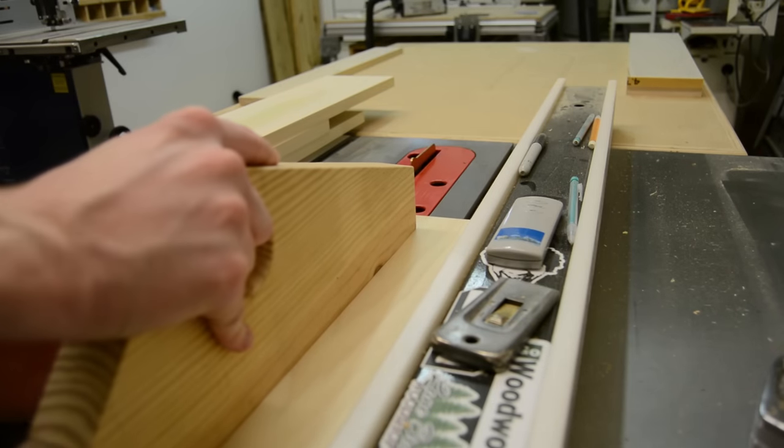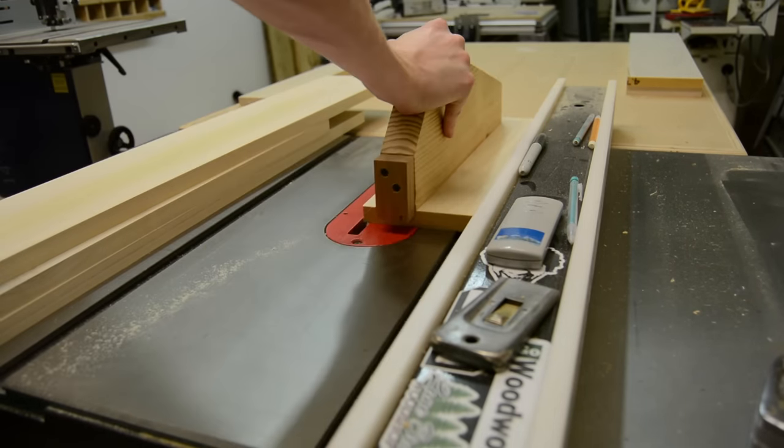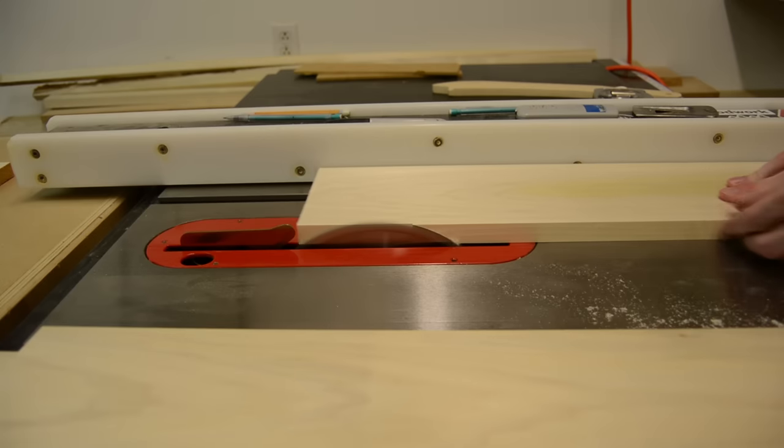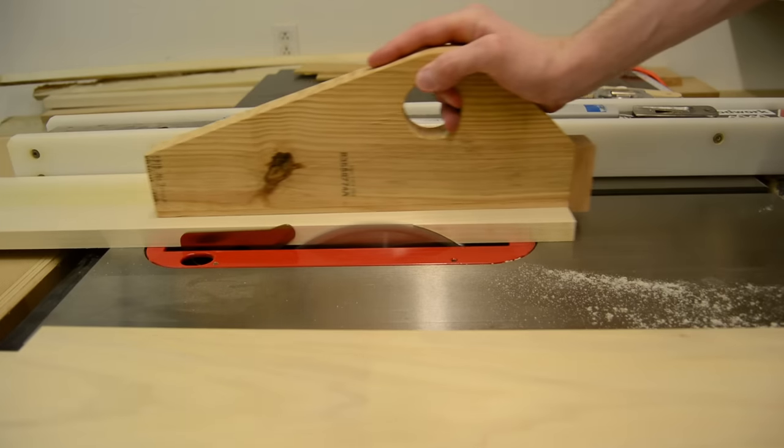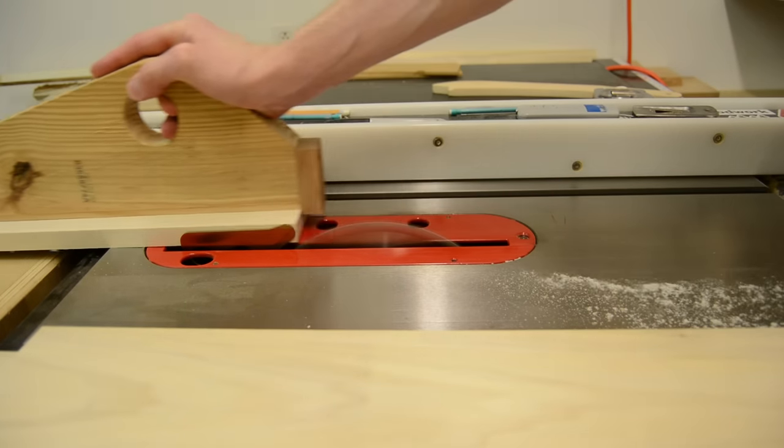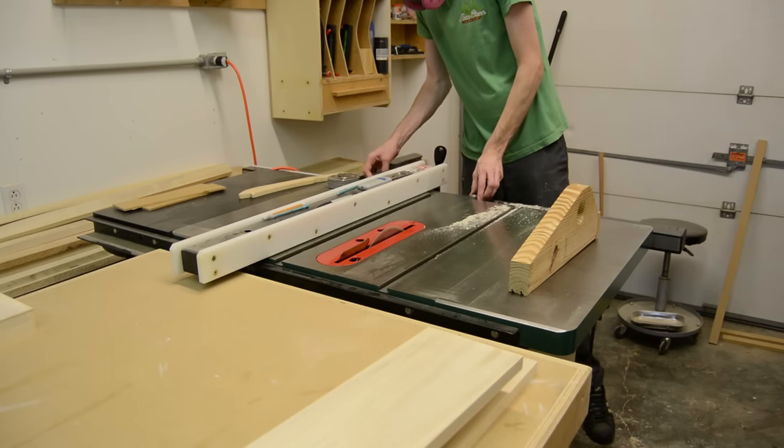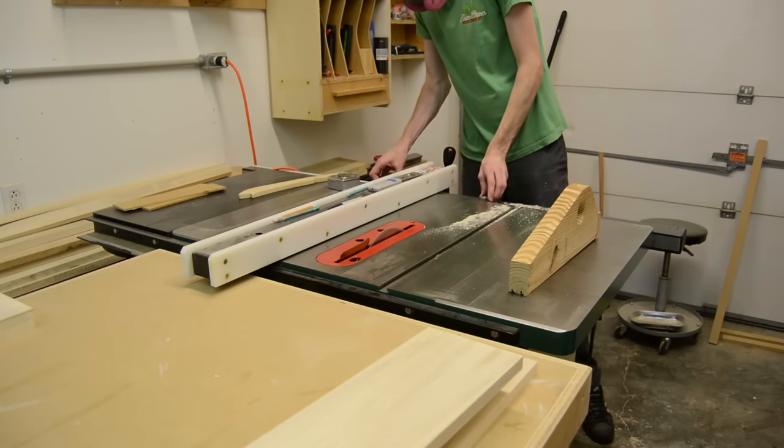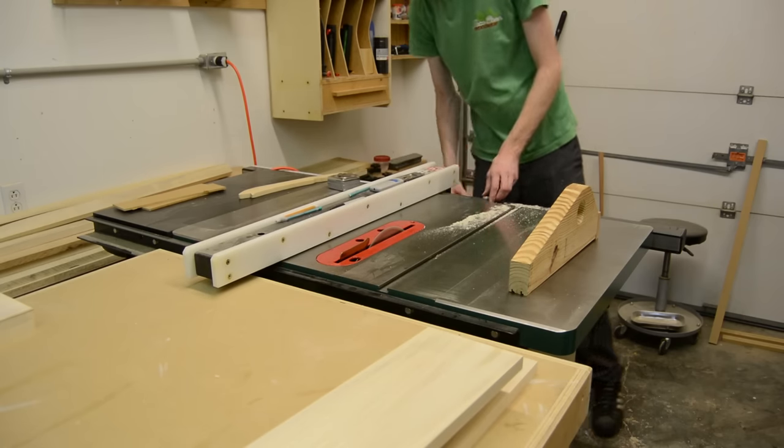I've already pre-milled all the materials for this project and I'm going to start by ripping down the parts for the top box and the corbels. I'm using mostly poplar for this project because it has a nice tight grain and it paints very well, plus it's fairly cheap.